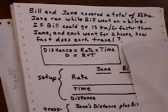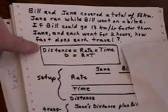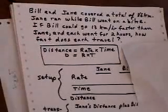Now, here is the main formula. Distance equals rate times time, or D equals RT.